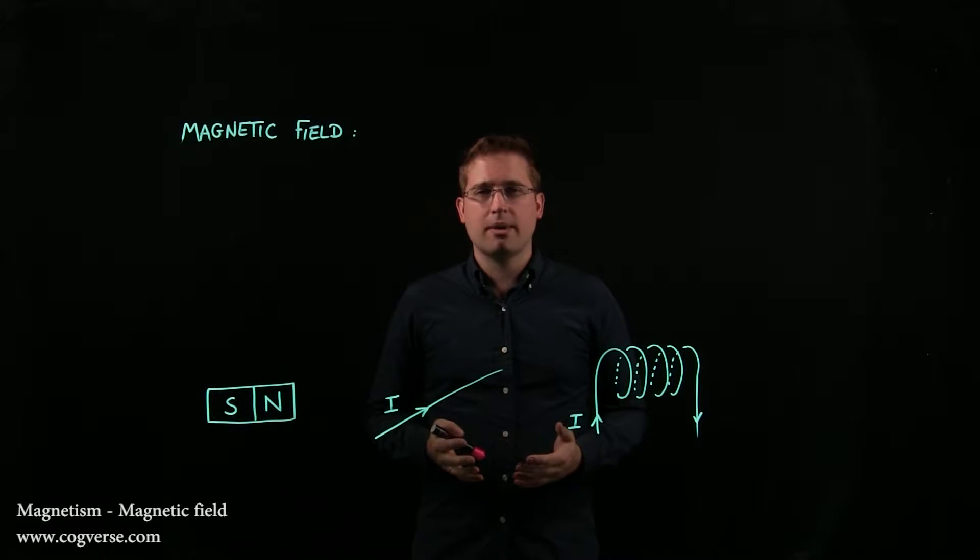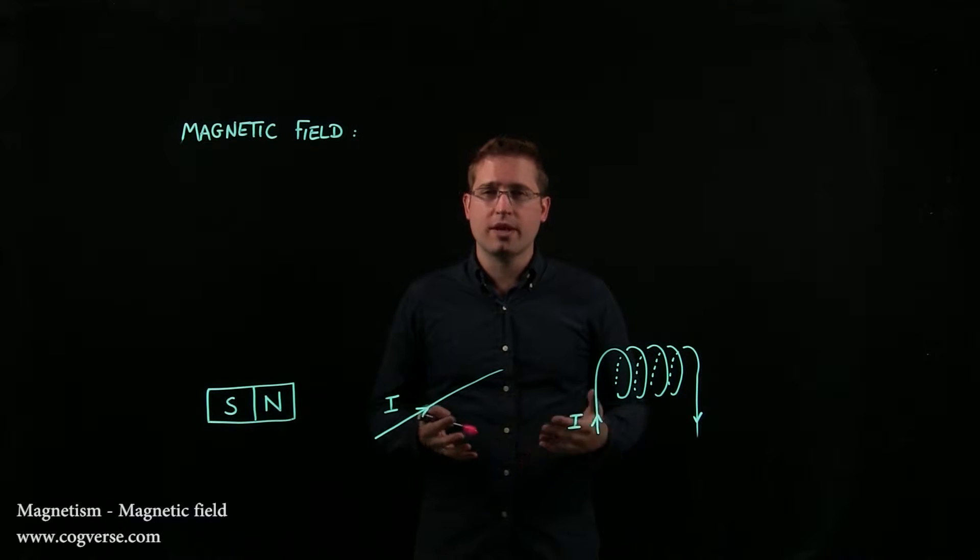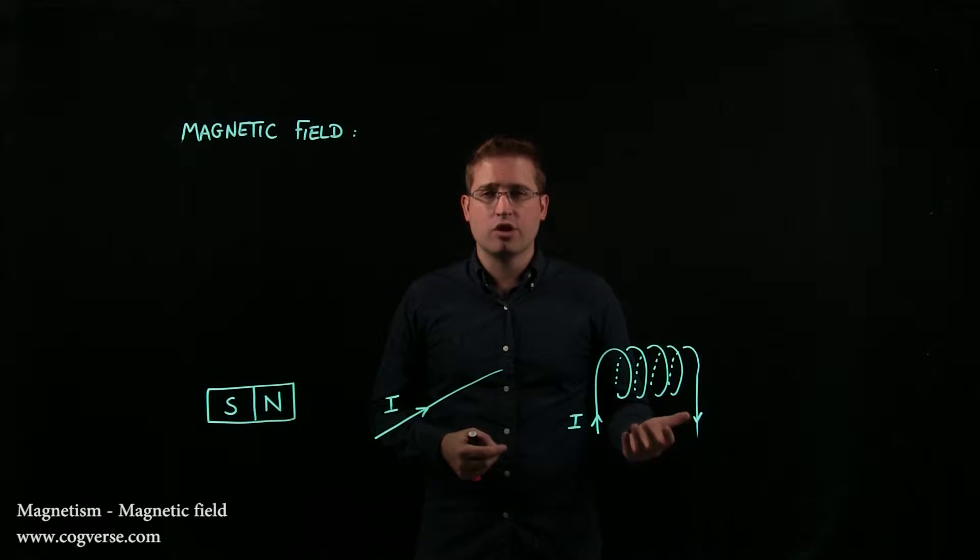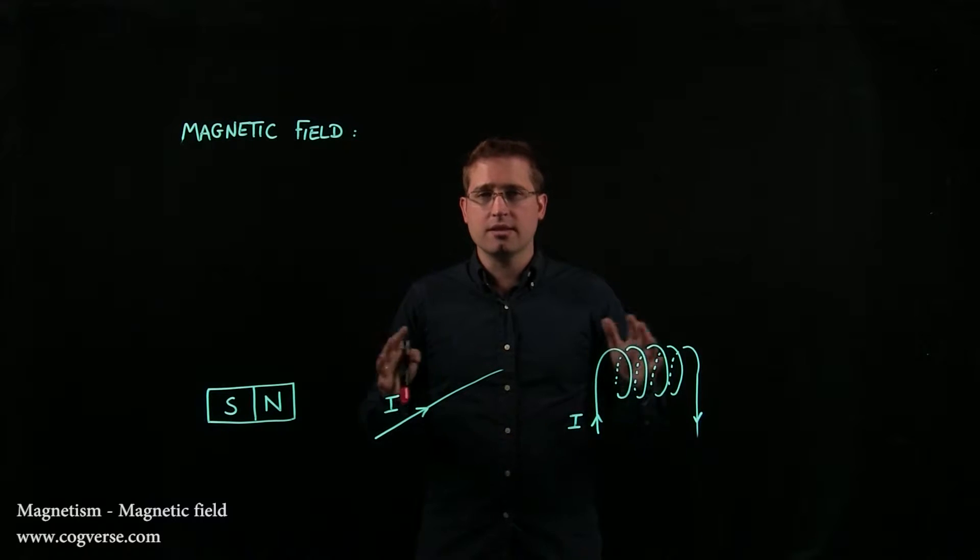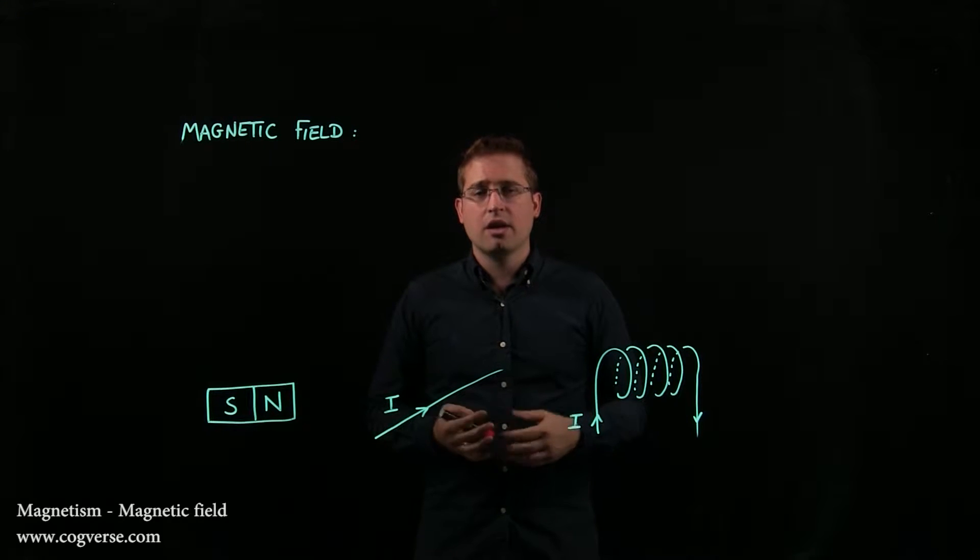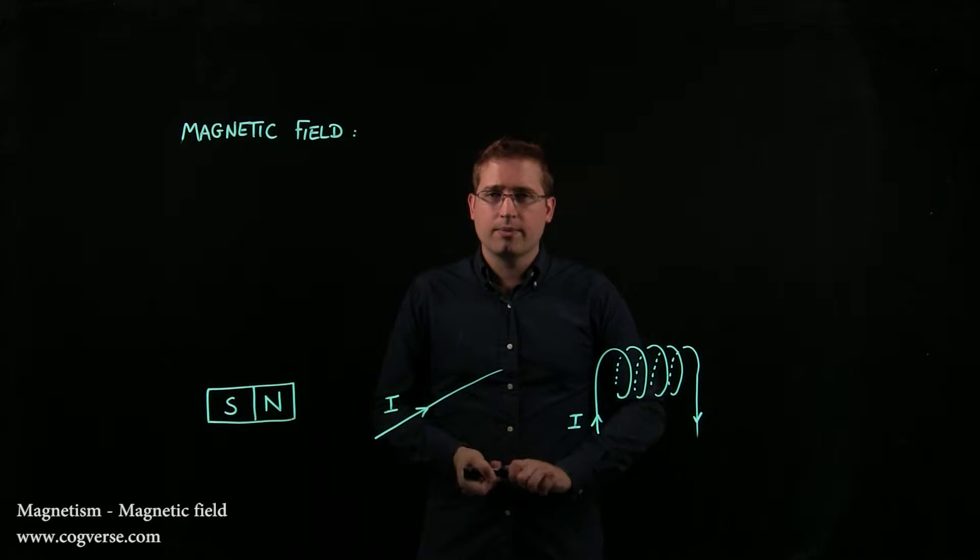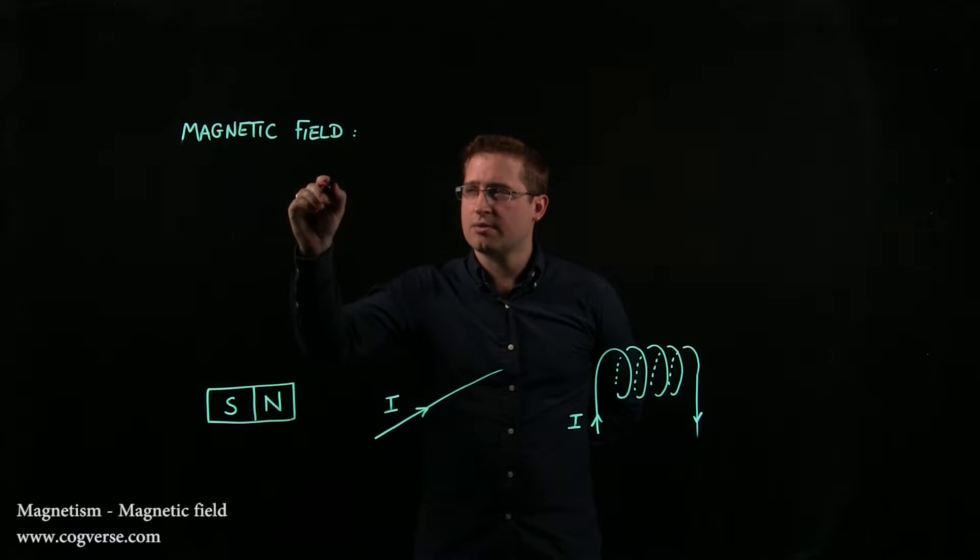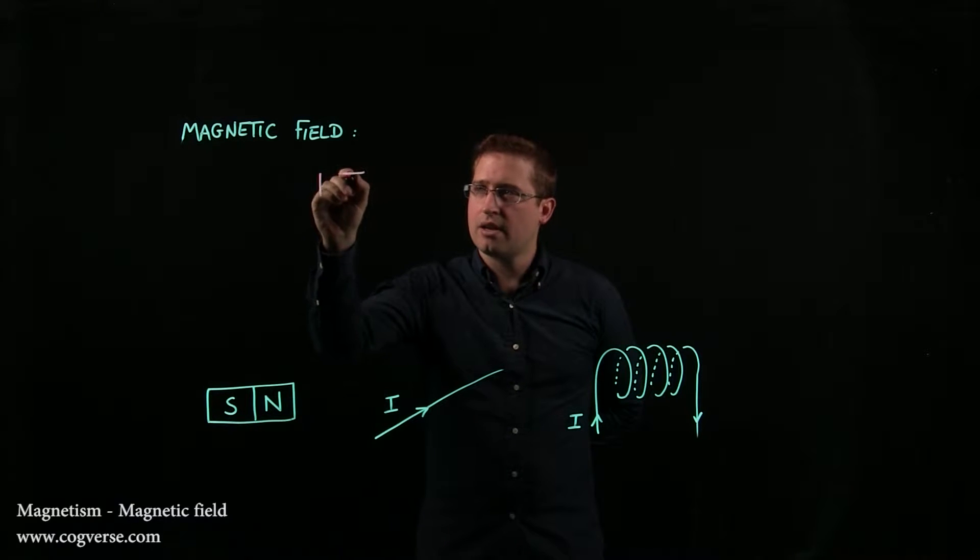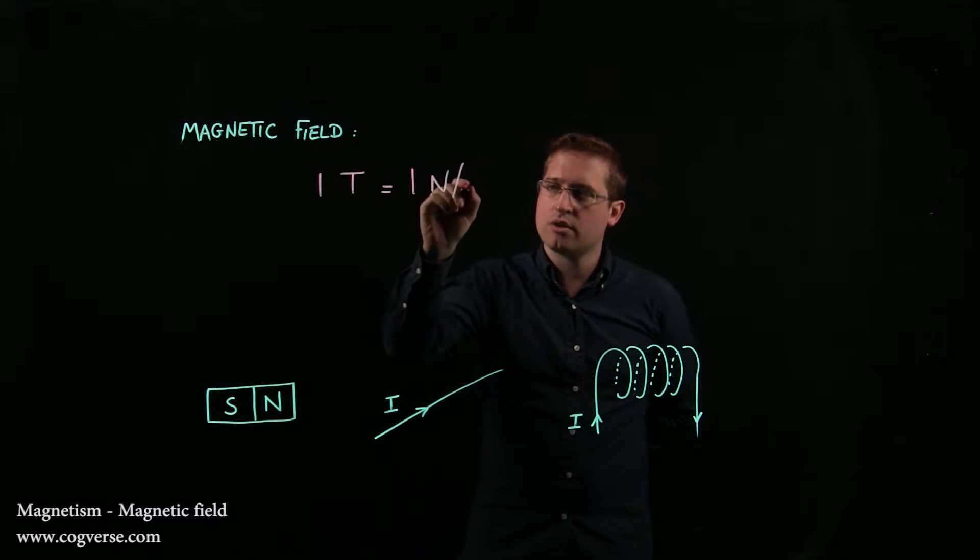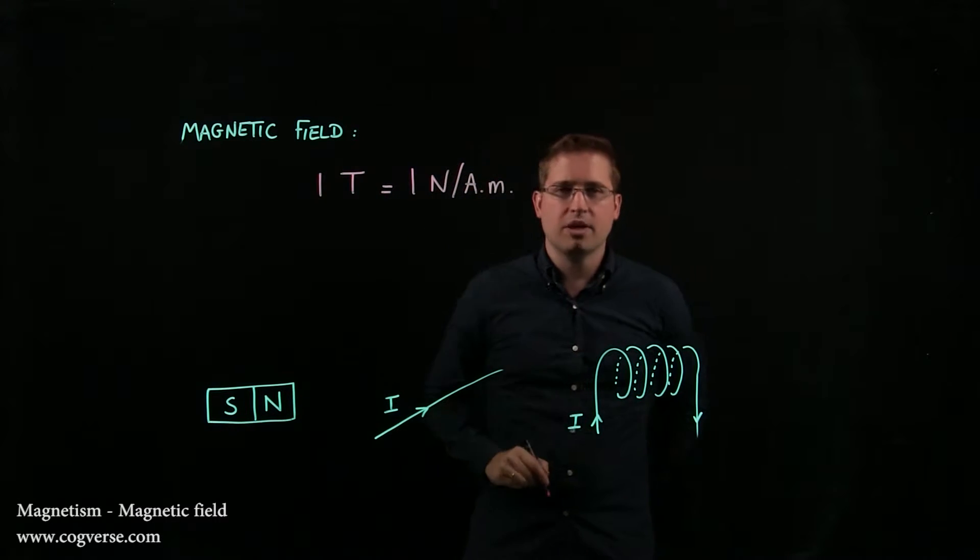A magnetic field can be created by a permanent magnet or a moving charge. If we take a moving charge and place it in an existing magnetic field, it will experience the magnetic force that we'll define a bit later. Now, the strength of a magnetic field is expressed in Tesla, and one Tesla is one newton per ampere meter.